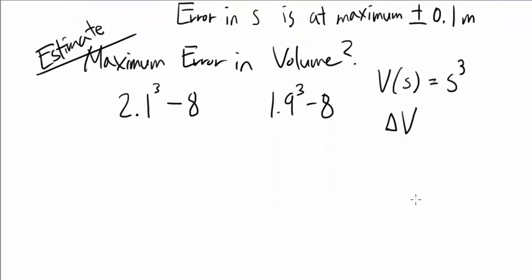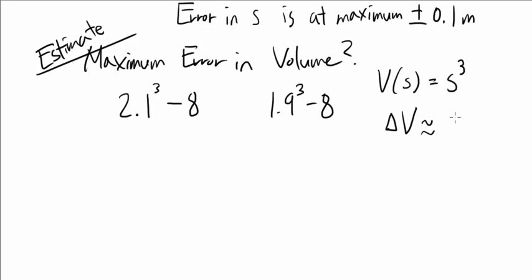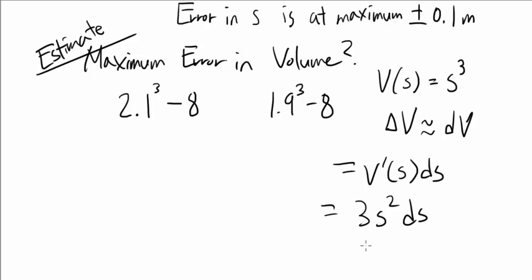How can we approximate ΔV? Using our differential of V, or dV, or V'(S)dS. And what's V'(S)? 3S². So we know our ΔV is approximately 3S²dS.